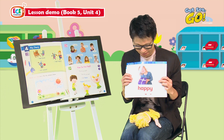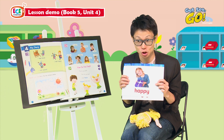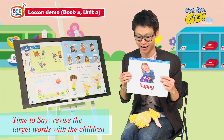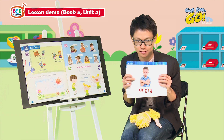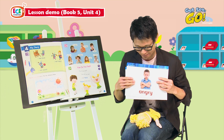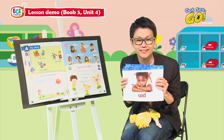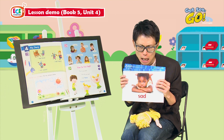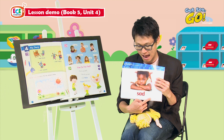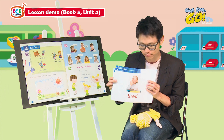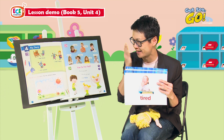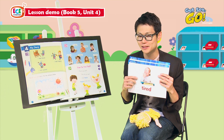Let's go over the word cards again. Is she sad or happy? She's happy — do you remember the action for 'happy'? How does he feel? He's angry — remember the action for 'angry.' This one — he's feeling sad. And this one — she's feeling tired. Do the action: tired!